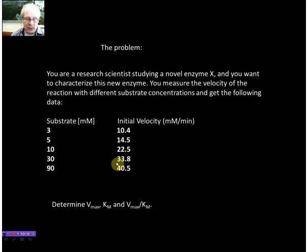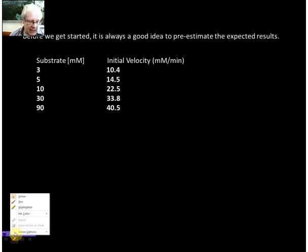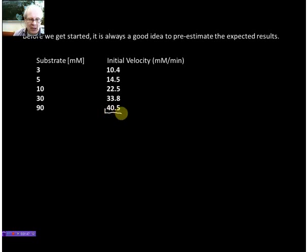So far, so good. Before we get going, it's always a good idea to find out what we should expect. What do we expect for our Vmax? We know that our Vmax must be larger than our largest initial velocity. So maybe we can say Vmax might be in the order of around 45 millimolar per minute.